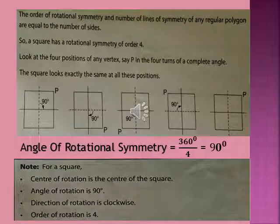The order of rotational symmetry and the number of lines of symmetry of any regular polygon are equal to the number of sides. For example, a square has four equal sides, so its order of symmetry is 4 and the lines of symmetry are also 4. We can use this to analyze different objects and find their order and lines of symmetry. To calculate the angle of rotational symmetry for a square: since the order is 4, we get 360 ÷ 4 = 90 degrees.